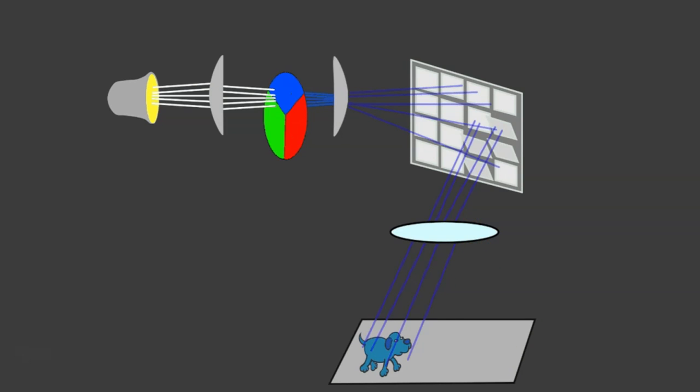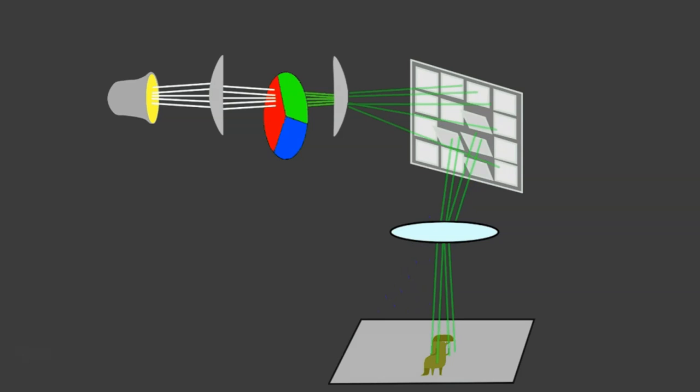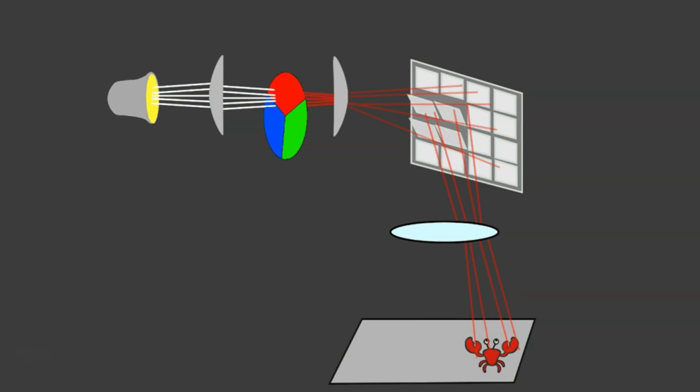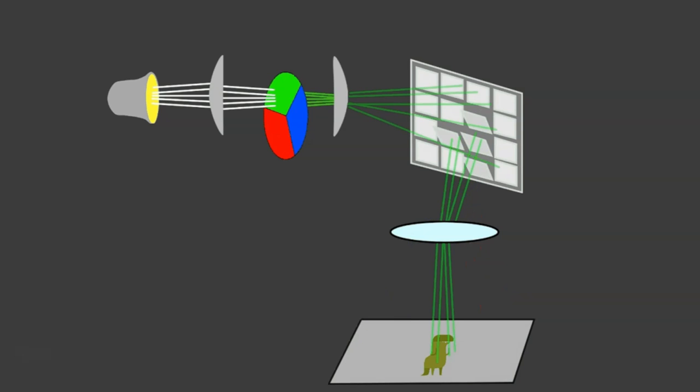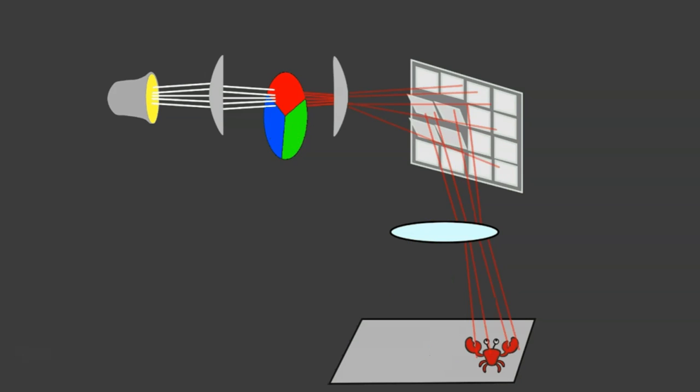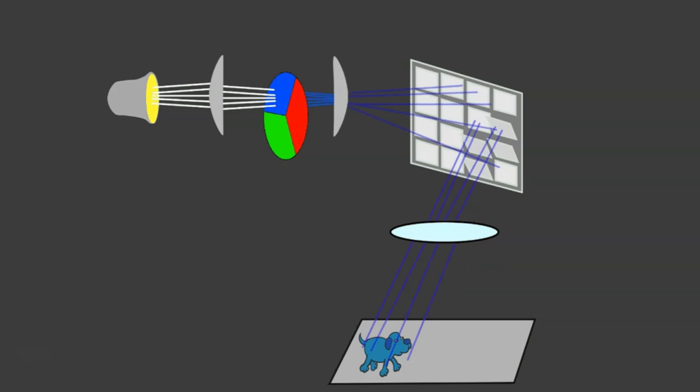Now because this system uses a color wheel, it only displays each individual color channel at any one time. So first it will display whatever image it's trying to display of the green component.